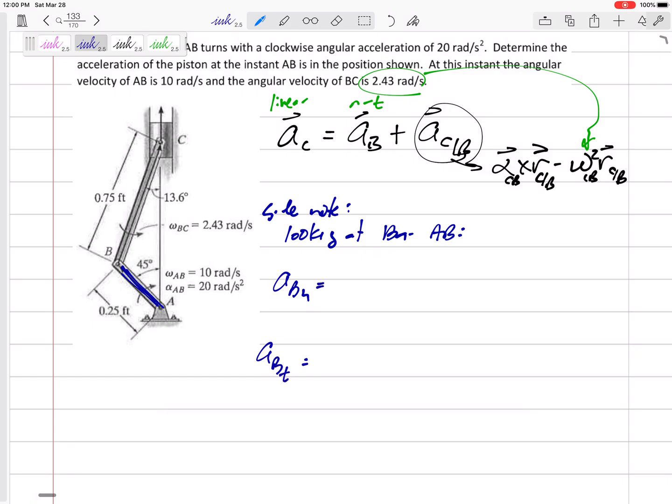So by looking at bar AB, let's find a_B normal and a_B tangential. Alright. a_B normal is either V squared over R or R omega squared. Now, this is, again, I'm looking at bar AB. This is R of bar AB 0.25 times omega 10 squared. So this is 25, but what direction is it? I need I's and J's before I plug it in up here. We are lucky we've got a 45 degree angle, but it is both.